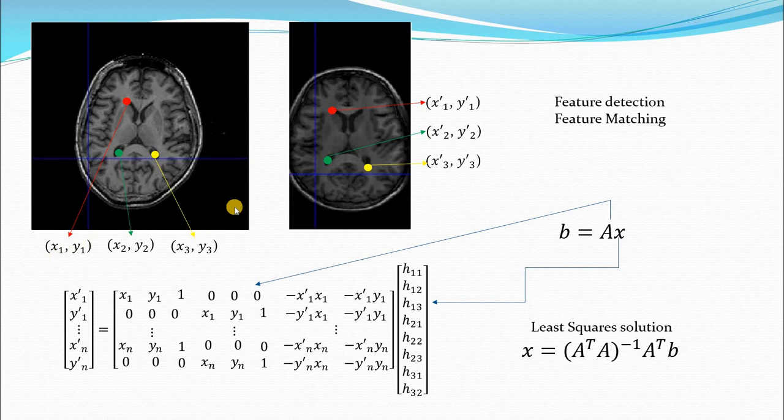So now that we have x1 y1 corresponding x1 dash y1 dash, x2 y2 corresponding x2 dash y2 dash and x3 y3 corresponding x3 dash y3 dash. Similarly we can take n number of points. So suppose I choose n number of points over here, correspondingly I have n more points over here. So I can generate a matrix like this. So this is the homography matrix.